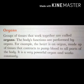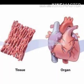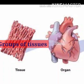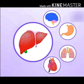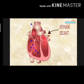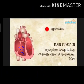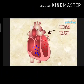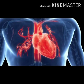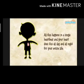For example, the heart is an organ made up of tissues that contracts to pump blood to all parts of the body. It is a very powerful organ and works constantly. Tissues ke groups mil ker kaam kerti hain jinhe organs kehte hain. Heart ek organ hai jo tissues se mil ker bana hai. Heart contract hota hai — means sukarata hai — aur blood ko tamam parts tak pehunchata hai. Heart ek powerful organ hai aur ye mustakil kaam kertai hai.